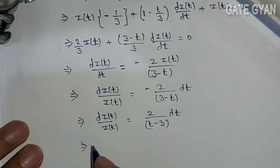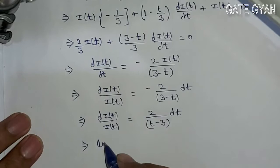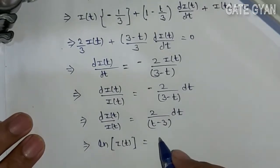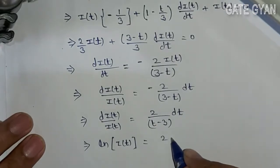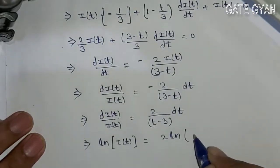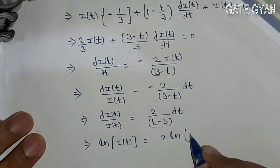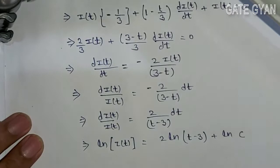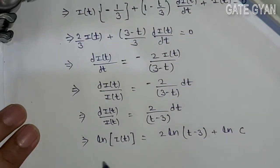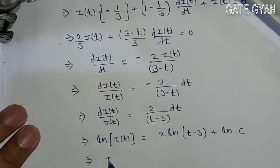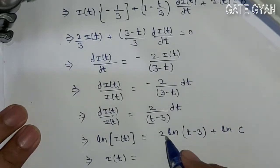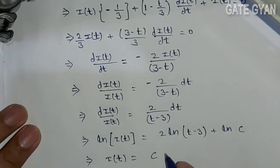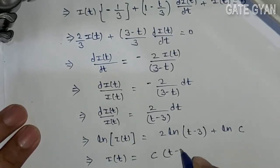Taking integration on both sides: ln I(T) = 2·ln(t - 3) + ln C, where C is the integration constant. After solving, this gives I(T) = C·(t - 3)².